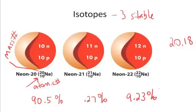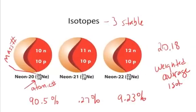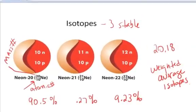So I could actually predict, based on these relative abundances, what the atomic mass should be, because the atomic mass is the weighted average of all the stable isotopes that exist in nature.